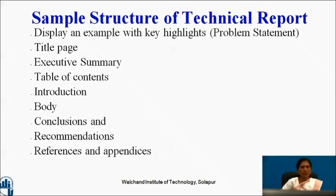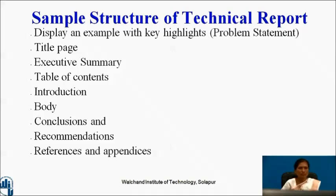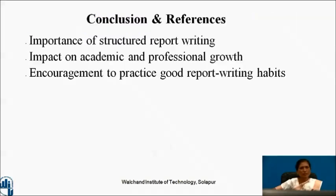Sample structure of a technical report: displaying all examples with key highlights. Problem statement. Then title page, as we have seen for industry visit report also. Then executive summary — also called an abstract. You can title it as an executive summary. State exactly what your objective is — that is the objective statement — and summarize it in a concise manner. This is the introduction of the technical report. Then the body: all the details about the observations of your practicals or the experiments done throughout the industry, web sources, or labs, including which challenges or issues you have taken. Then the conclusion you are getting, and recommendations, references and appendices.